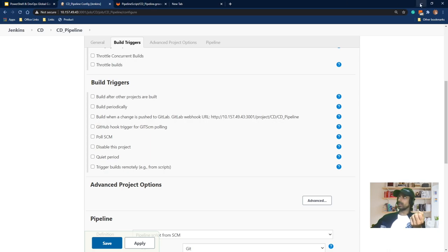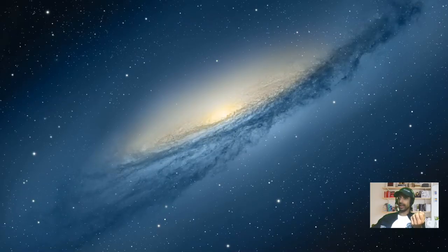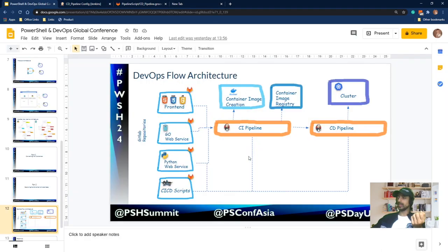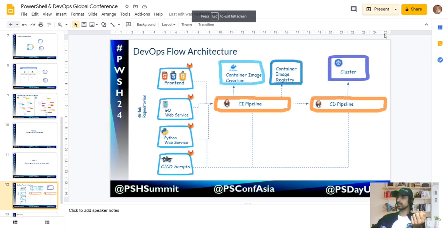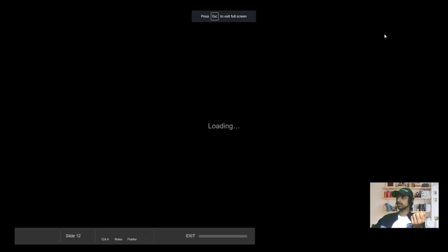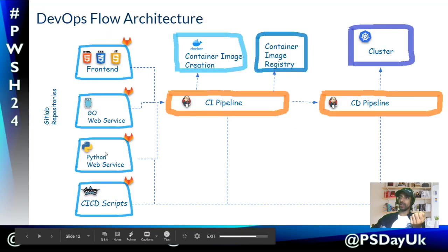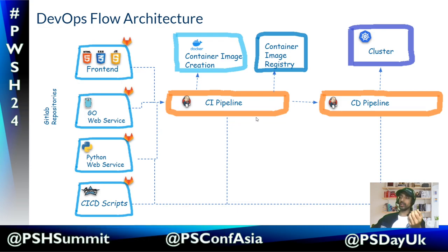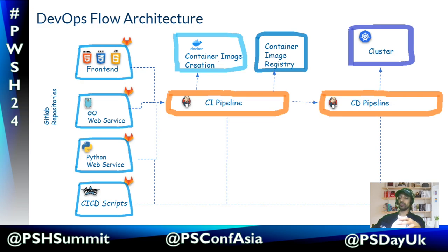This is how the complete flow looks: we have repositories, a CI pipeline, a CD pipeline, and it all points to the cluster. In our case, we are using Kind as our Kubernetes cluster, Docker Hub as the Docker image registry, and multi-stage Docker builds for the Go images.